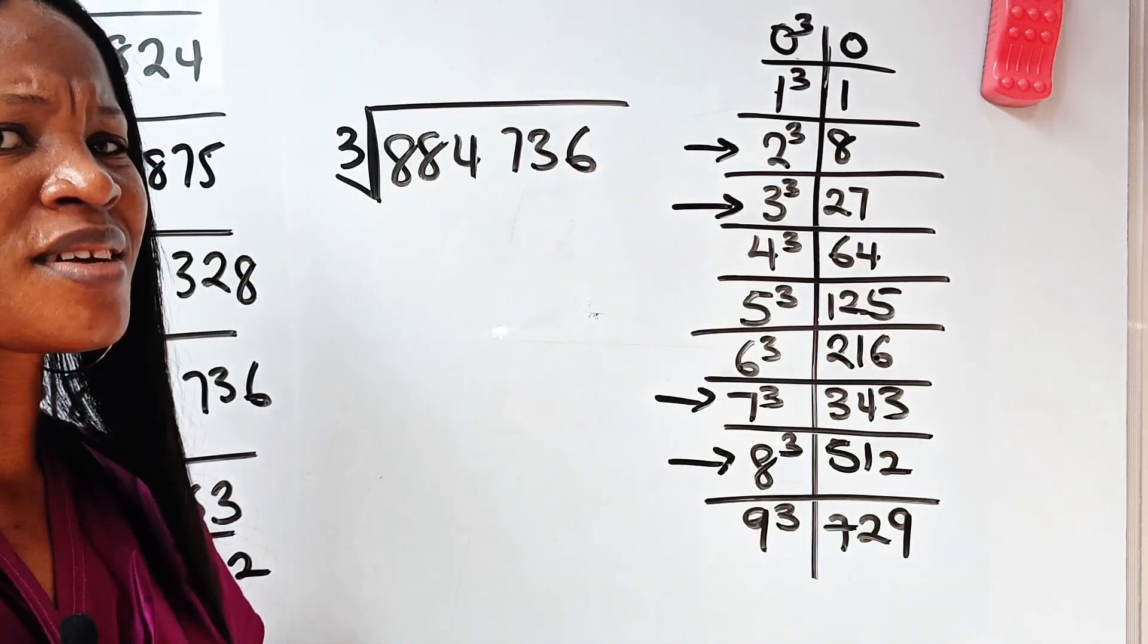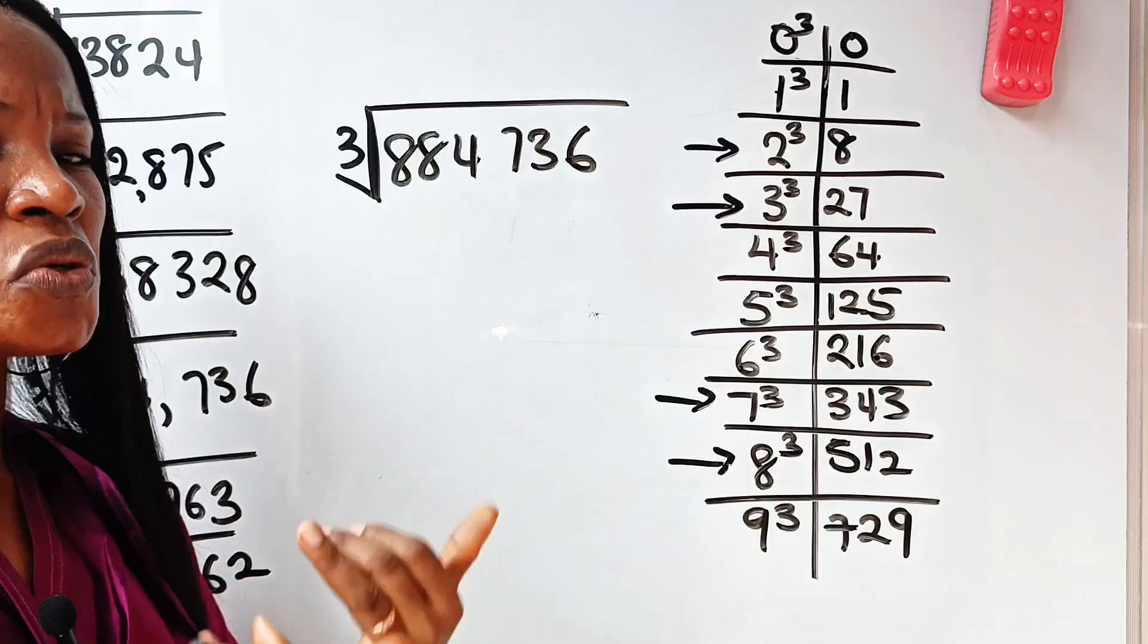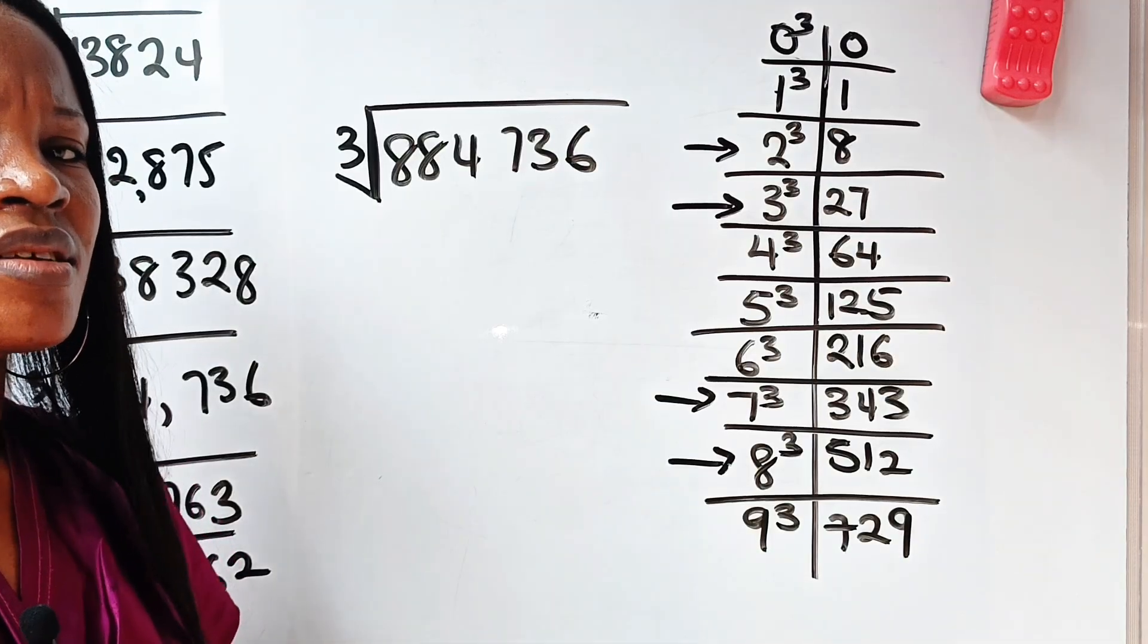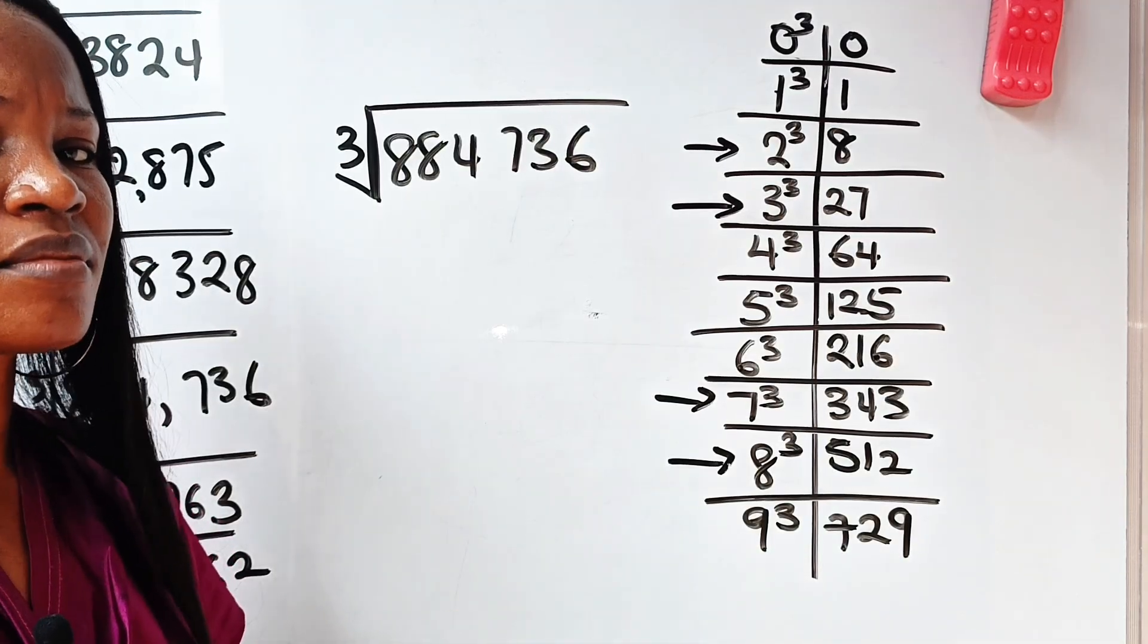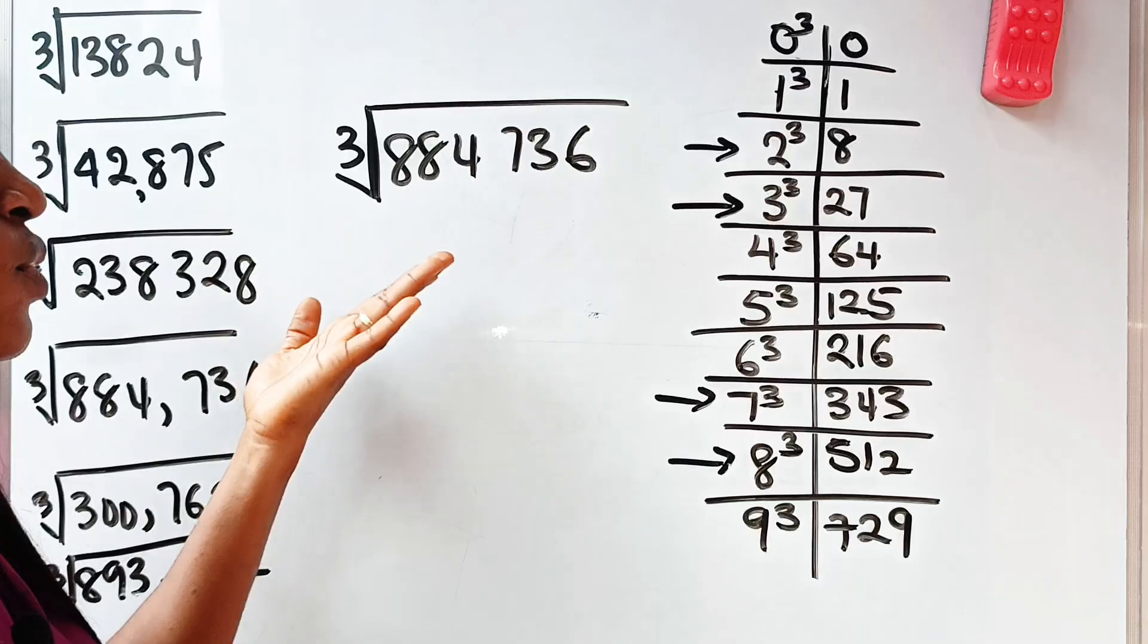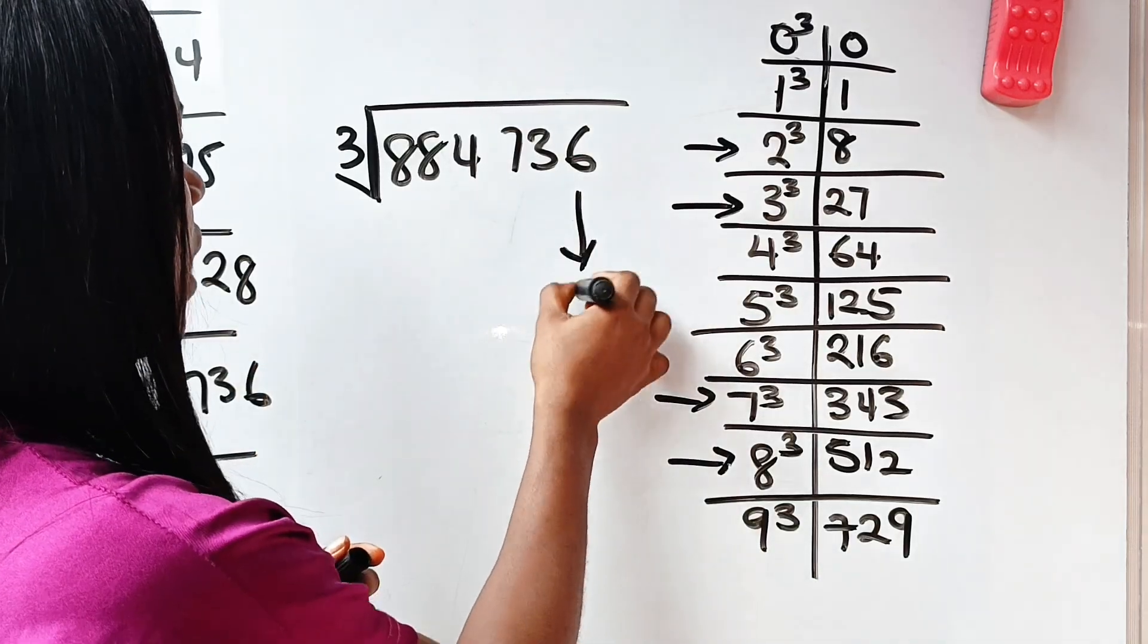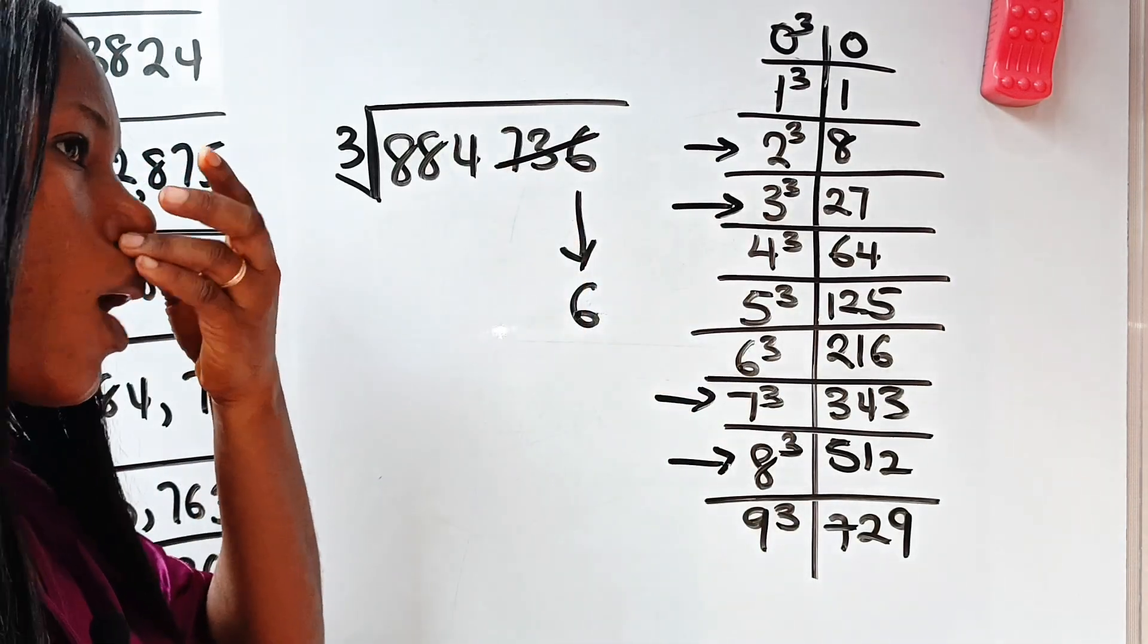You already know what the answer should end with. Should end with 6. Because this is not 2, this is not 3, this is not 8, this is not 7. So it will end with 6. I don't need to check. So it will end with 6. I've already told you why.